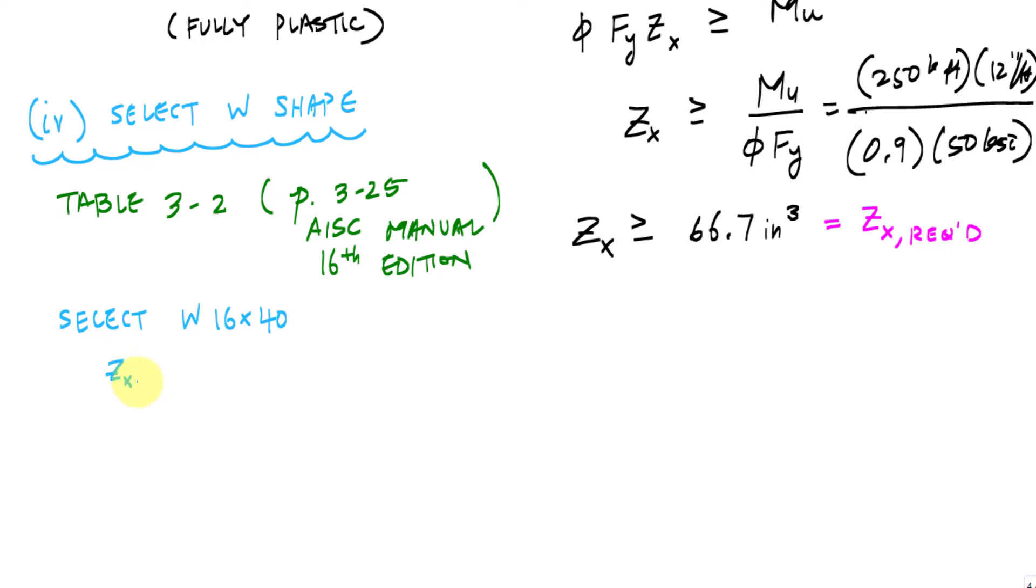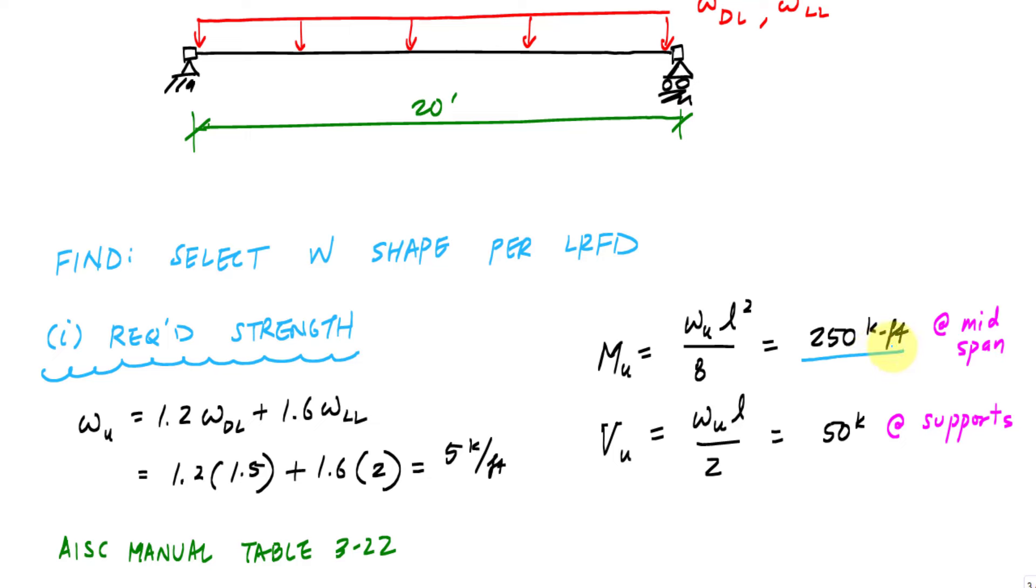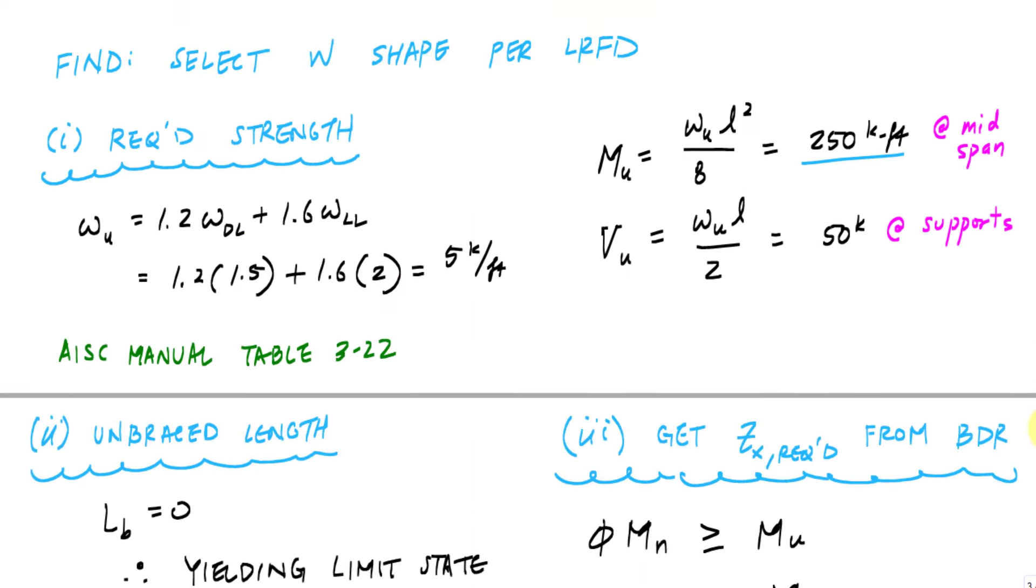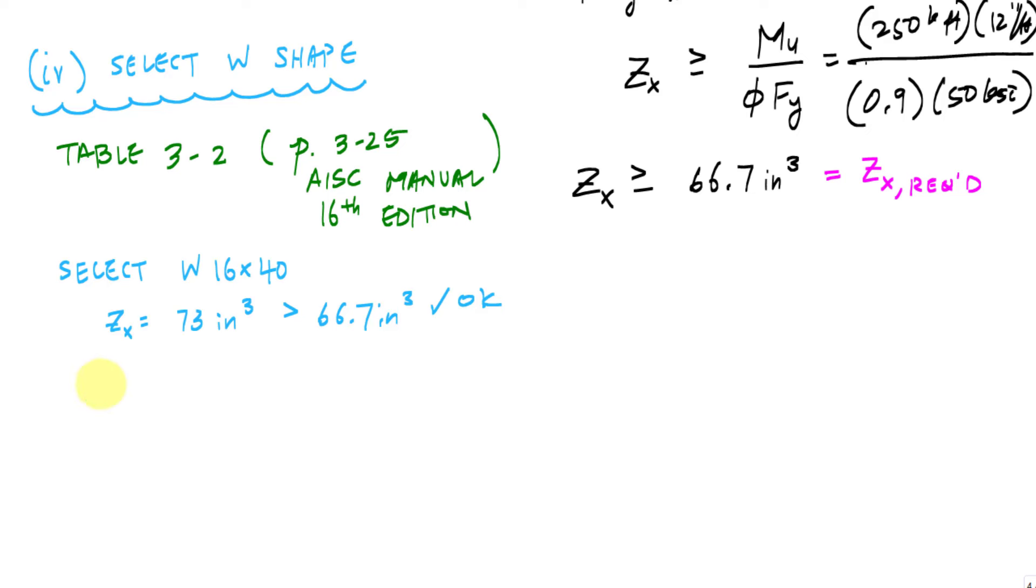There's a lot of information there. I see that Zx is equal to 73 inches cubed, which is greater than the 66.7 inches cubed. So check. You know, I probably could have just done this without the Zx. I could have just done it by the moment requirement. I could have taken this 250, gone back to the table, and looked at this column right here. Within that group, the most efficient shape is that W16 by 40 with a 274 kip feet capacity. So I could have just said this phi Mn for this W16 by 40, this moment capacity for fully plastic is 274 kip feet, which is greater than the 250 kip feet.